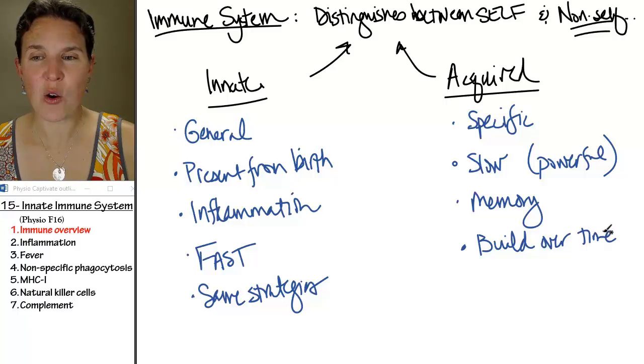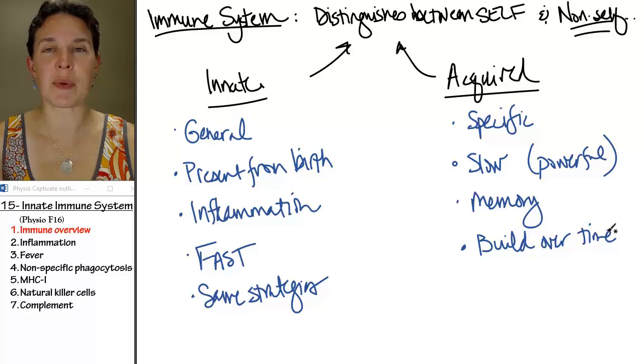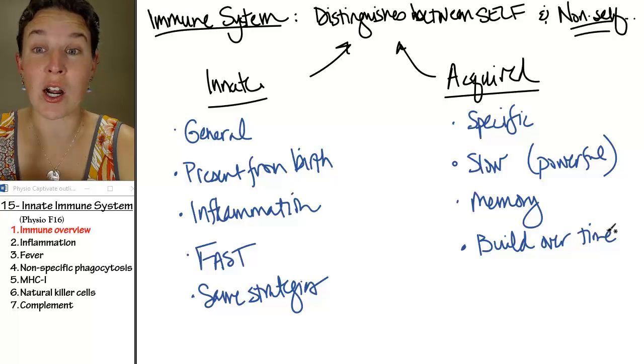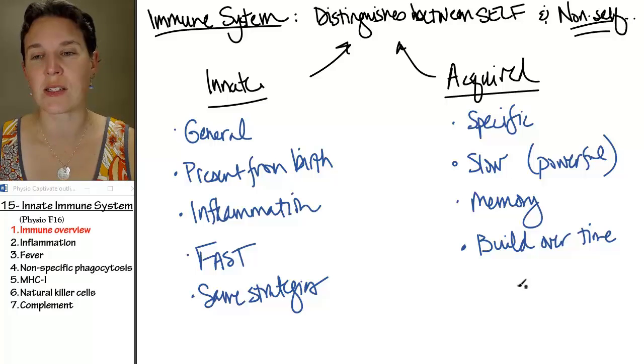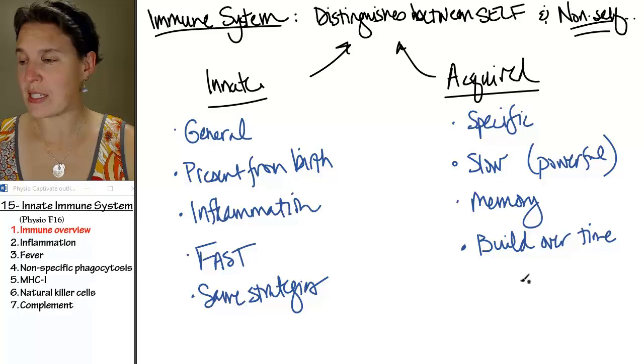And the acquired immune response is the physiology behind the use of vaccines. Vaccines take advantage of our acquired immune response to give us immunity against various conditions without even having to go through the disease.